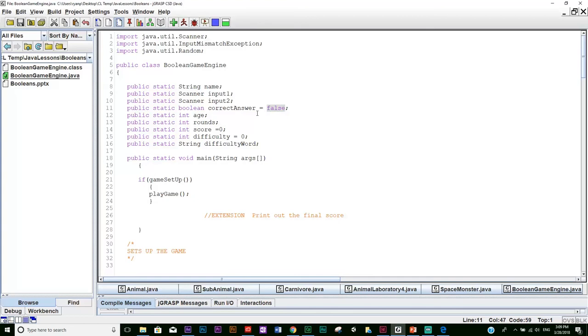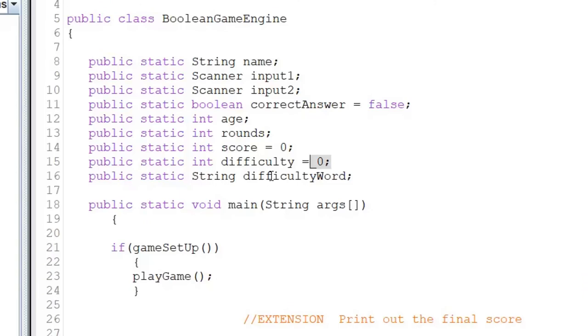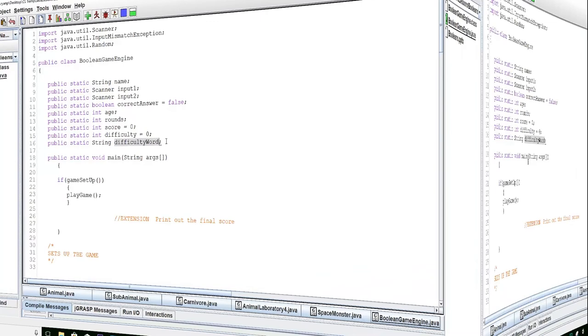Then we have age—we'll get the user's age, how many rounds of the game they want to play, their score. Again, it's an integer; I set it to zero. The score keeps track of the score. Difficulty—we'll keep track of the difficulty with a number. Then right here we create a String called difficultyWord. We'll assign a string value to this variable so that when we have a printout on the console, we can tell the user what difficulty level they selected.